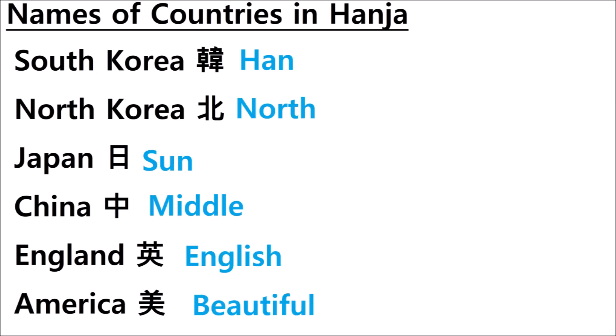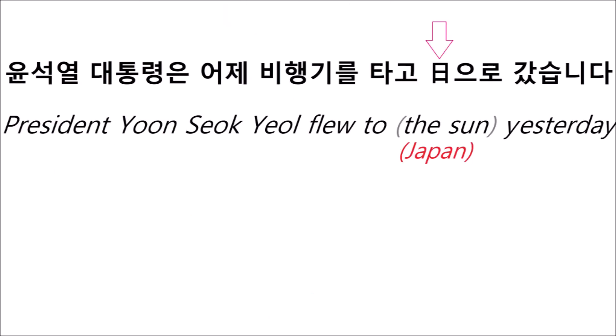South Korea is just Han. North Korea is just North. Japan is just Sun. China is just Middle. England is just English. America is just Beautiful. It might seem confusing to give these countries names with double meanings, but remember, Korean is very contextual — you should be able to figure out what you're reading based on context. Although, it is a little funny to think that when the president of Korea makes a trip to Japan, the newspapers publish: 'The president of Korea is flying to the sun today.' I do love these Hanja lessons.